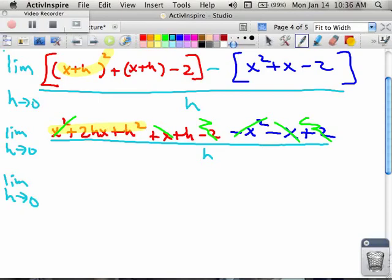Okay, so left over, on the top, I only have 2hx plus h squared plus h. And on the bottom, I have h.